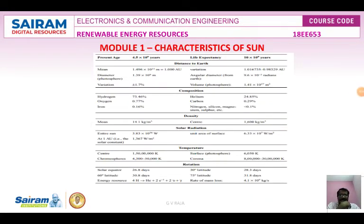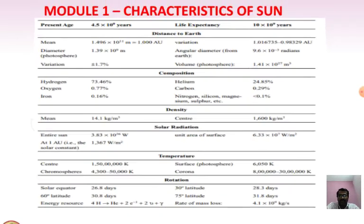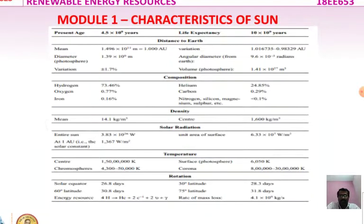The characteristics of the sun — including various parameters such as distance to the Earth, composition, density, solar radiation, temperature, and rotation — are summarized in a characteristics table.